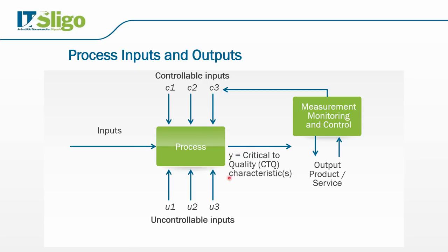These will be critical to quality characteristics. If you're not sure what your critical to quality characteristics are, you could ask your customer. There's a technique in Six Sigma called the voice of the customer, which we look at in more detail in the define phase. We then have an output, which could be a product or service. And we have ongoing measurement, monitoring, and control, which feeds back into the process.